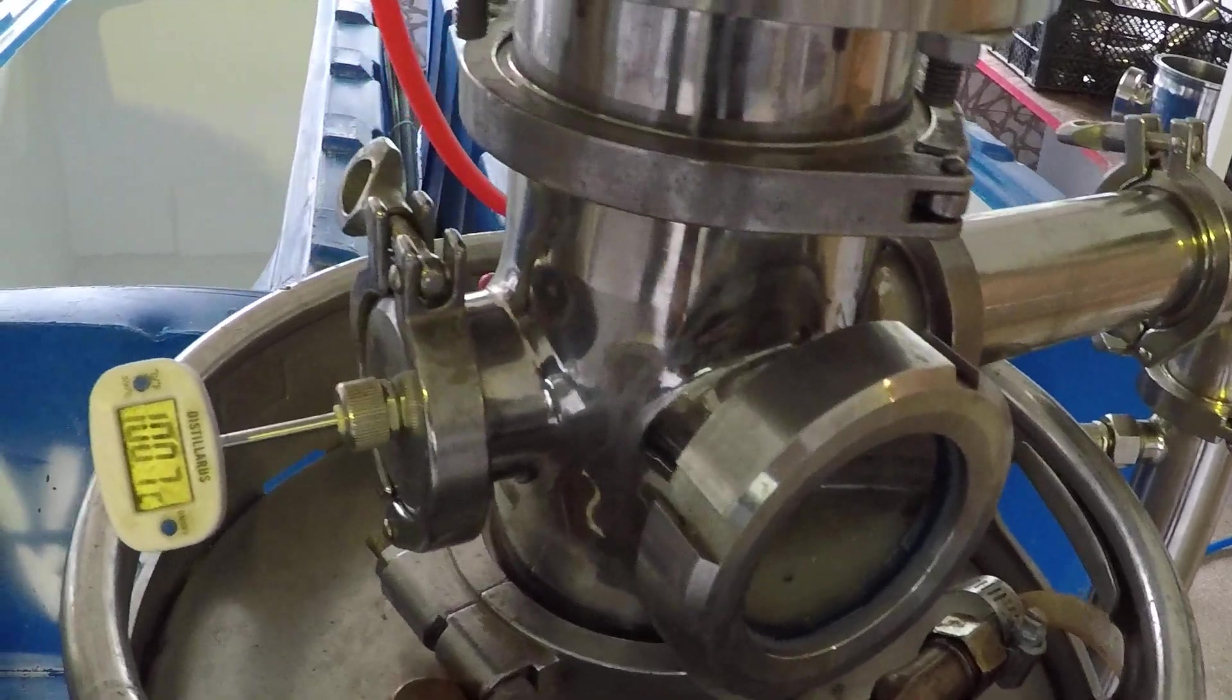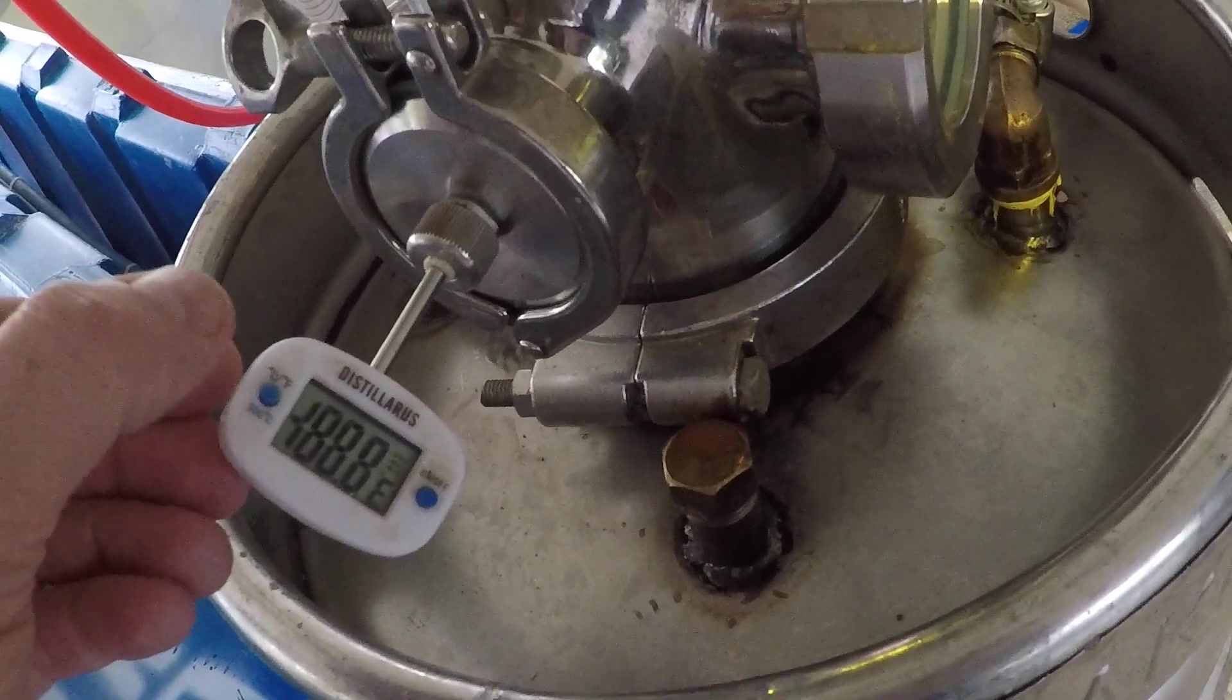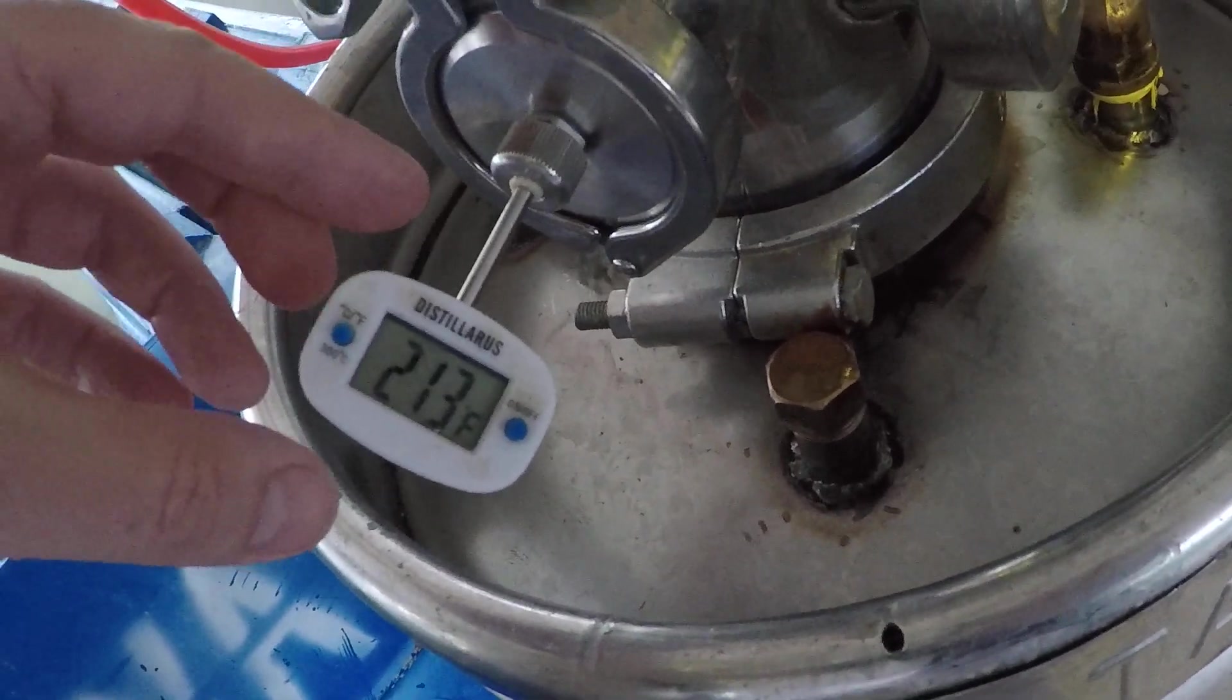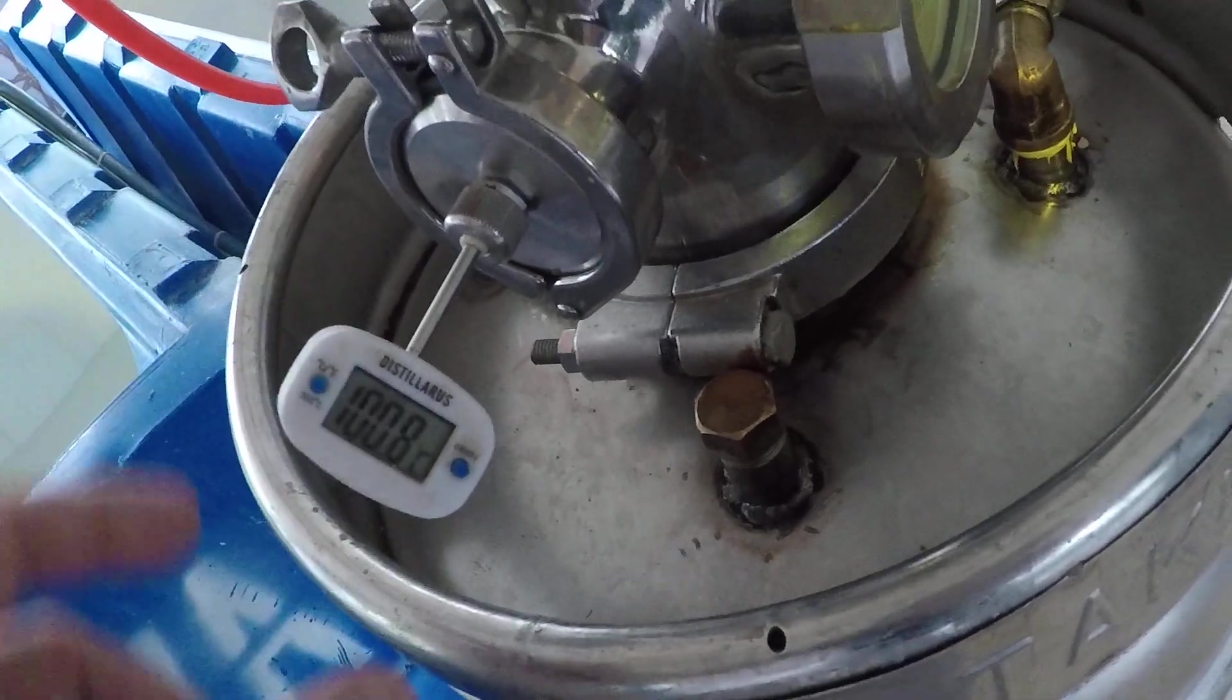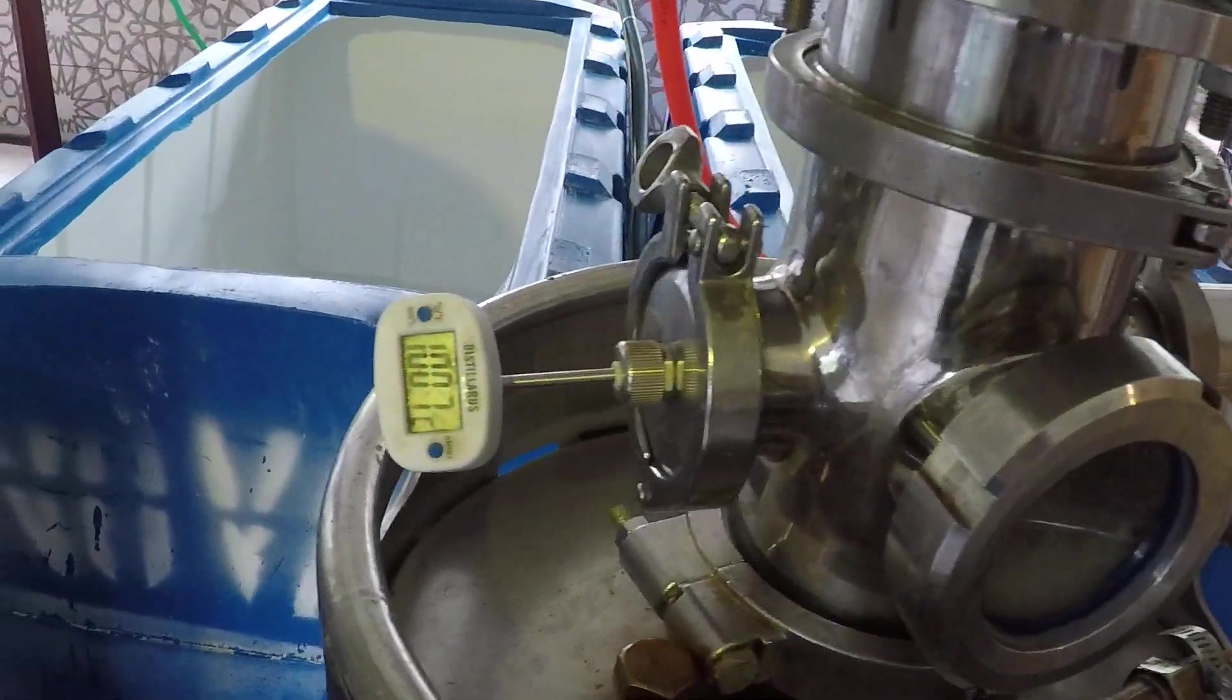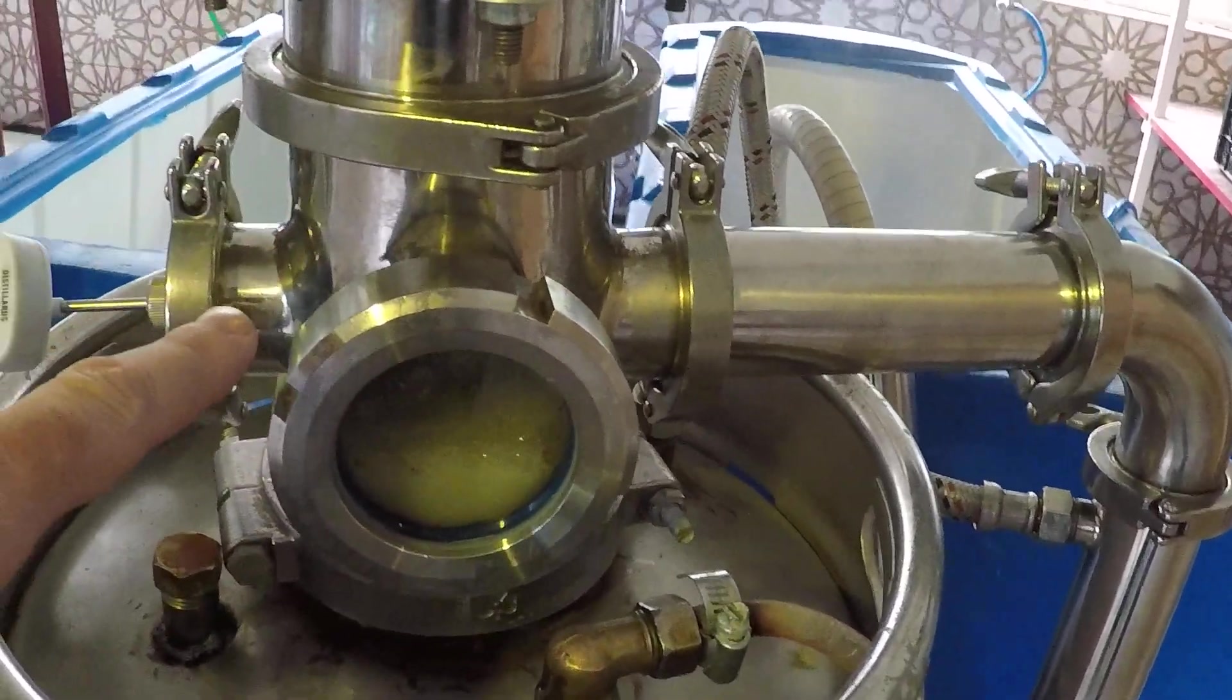On the bottom of the tower we have a temperature of 100.7 Celsius, which is about 213 Fahrenheit. This means it's dry wort with no alcohol remaining. If you have a temperature below 100 degrees, that means some loss of alcohol.